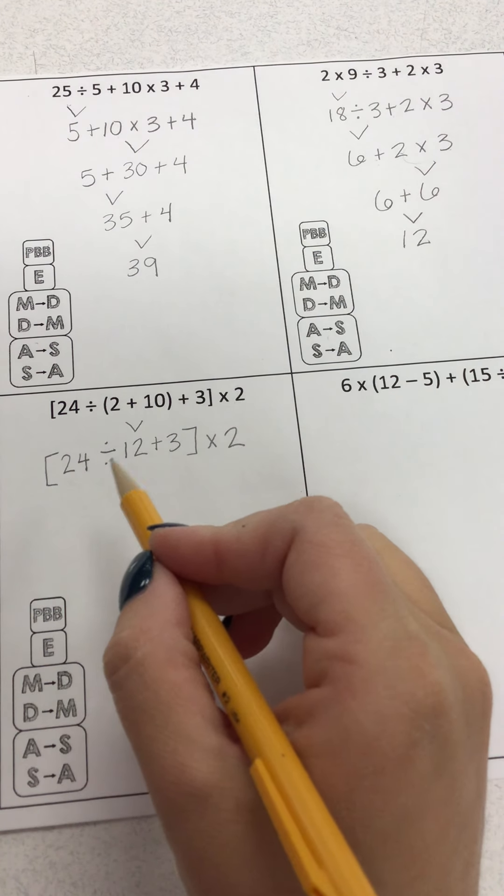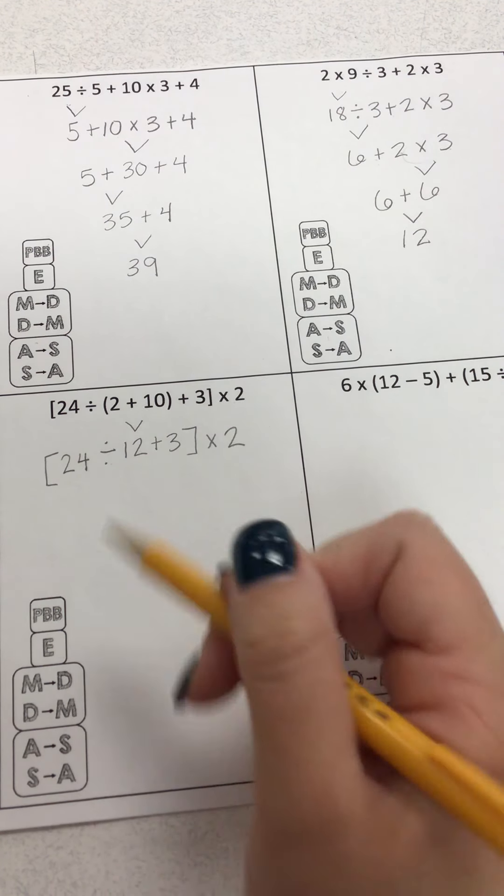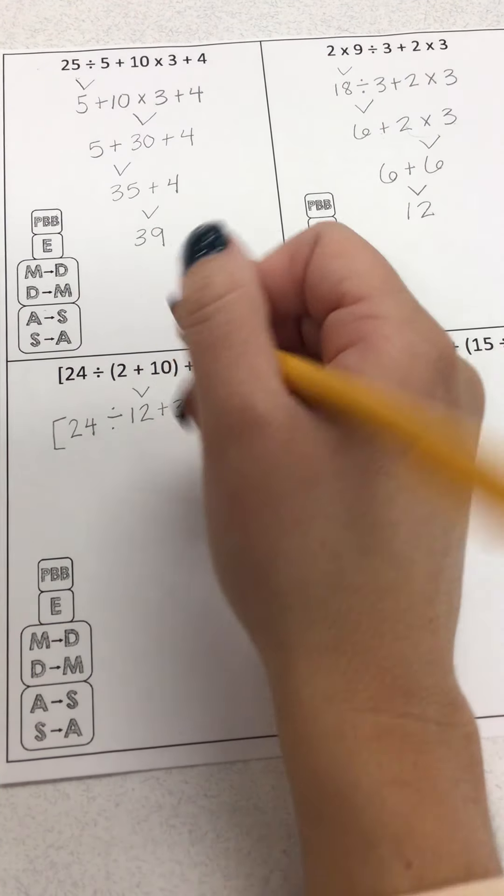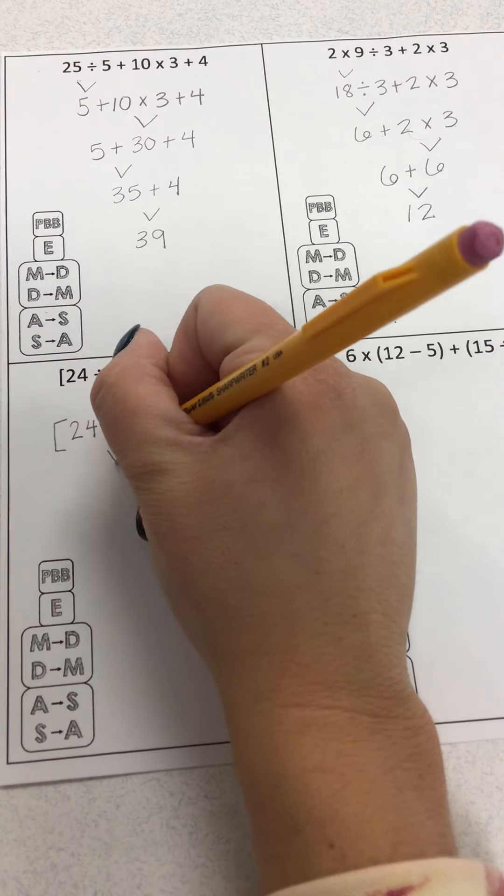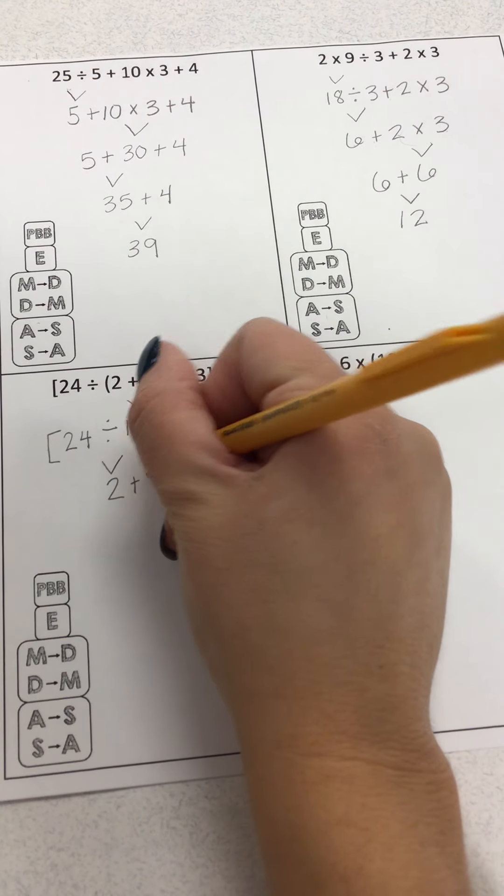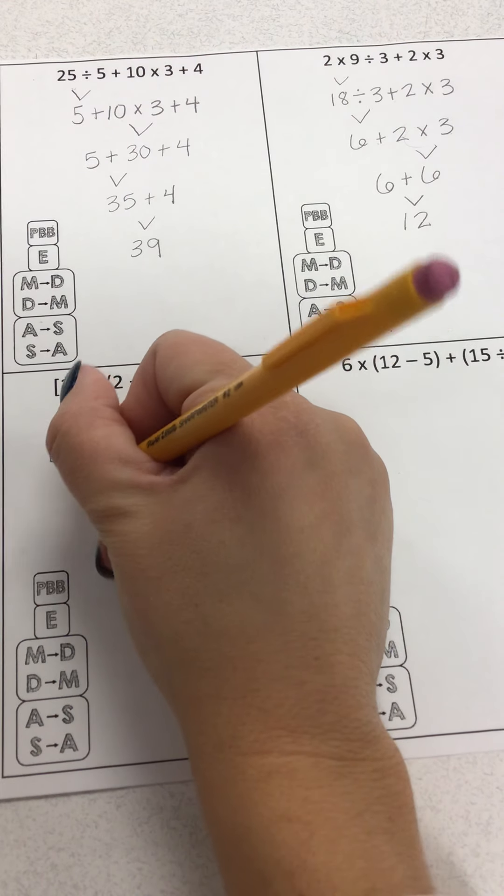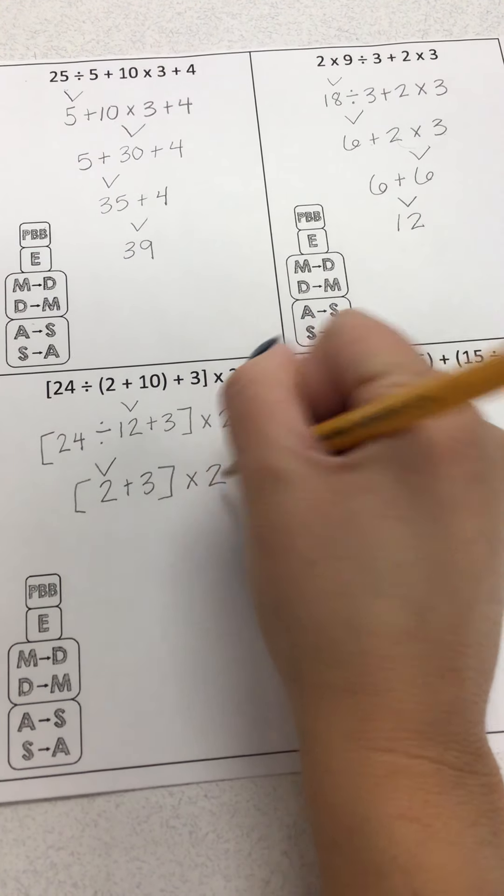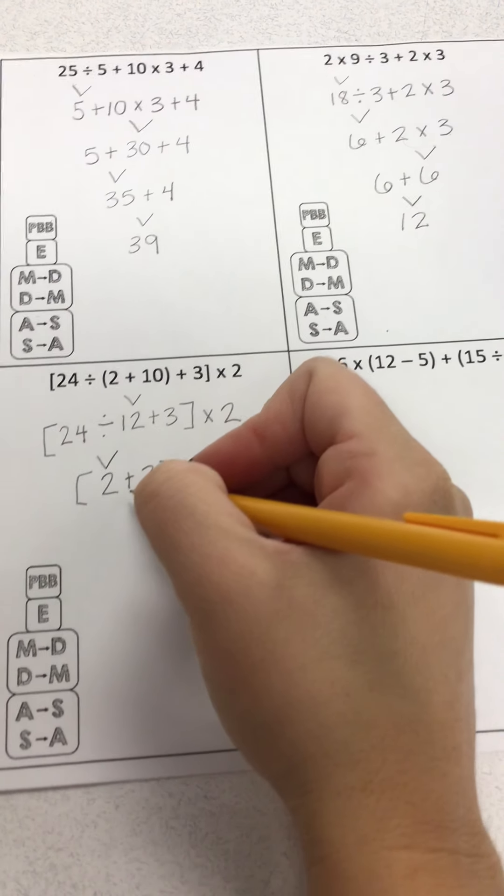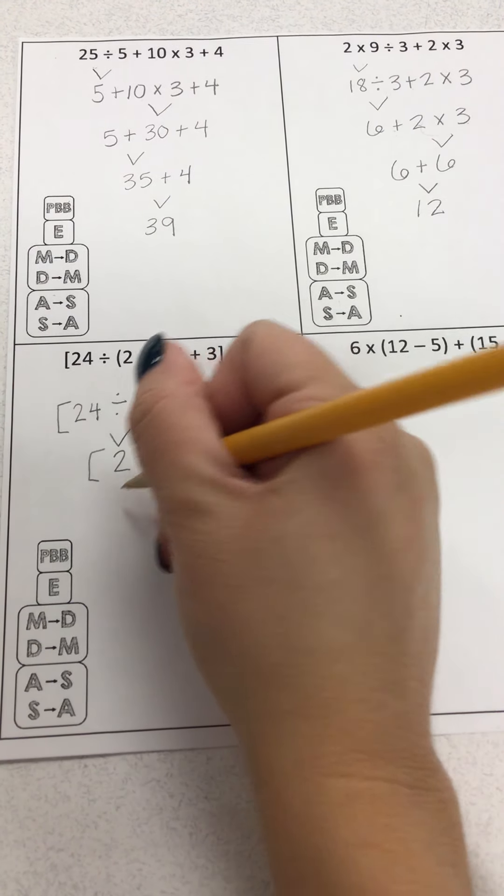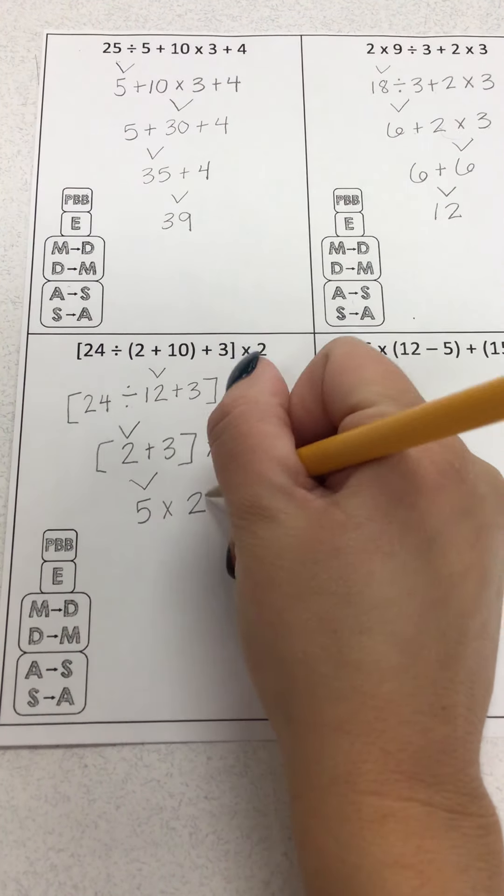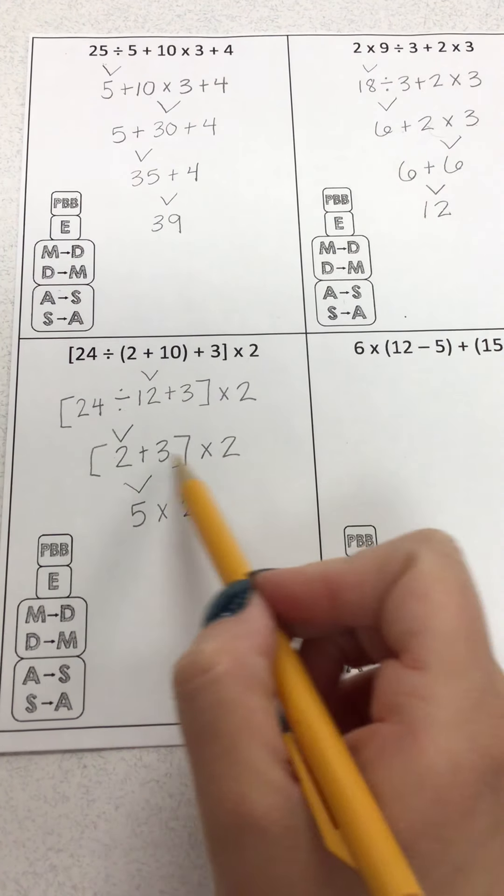So now we'll just pretend this is gone. I have divide or add. Well, down here, division comes first. I'm going to divide this 24 and 12. So 24 divided by 12 is 2. And I still have this plus 3 and that stays in my brackets. Bring down the multiplied by 2. I have one more operation in my brackets. 2 plus 3 is 5. Then I bring down the times 2. Now my brackets are gone.